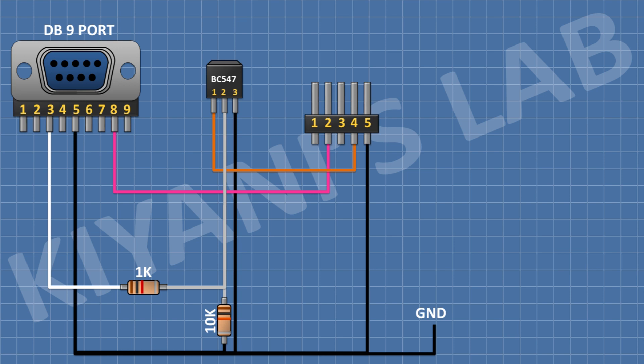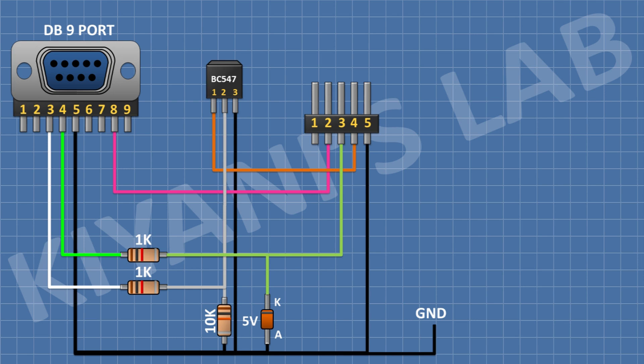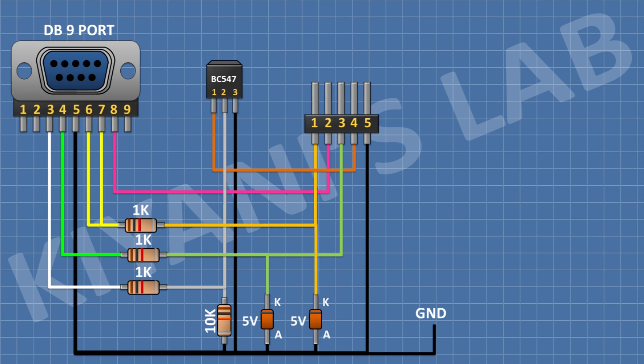Connect a 1K resistor with one pin to pin 4 of the DB9 connector and its other pin to pin 3 of the male header. After that, connect a 5V Zener diode with its cathode to pin 3 of the male header and its anode to ground. Then connect another 1K resistor with one pin to pins 6 and 7 of the DB9 connector and its other pin to pin 1 of the male header. Connect a second 5V Zener diode with its cathode to pin 1 of the male header and its anode to ground.